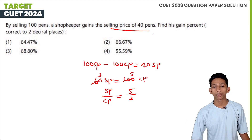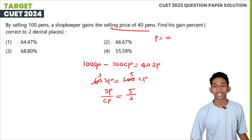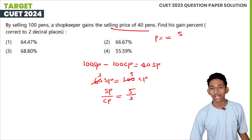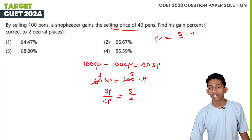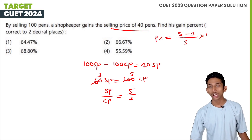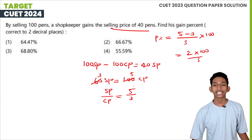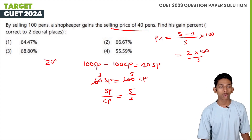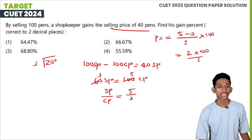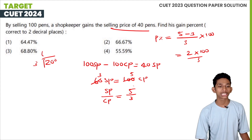Profit percentage = (SP − CP) / CP × 100 = (5 − 3) / 3 × 100 = 2/3 × 100 = 200/3.